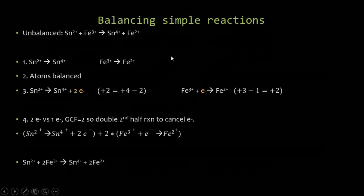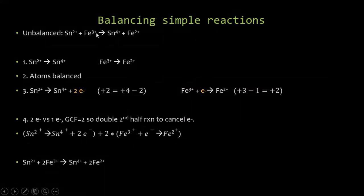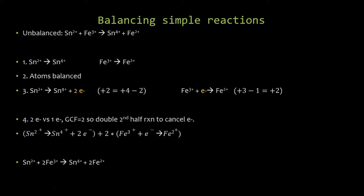The harder ones get trickier. Consider: Sn²⁺ plus Fe³⁺ goes to Sn⁴⁺ plus Fe²⁺. This looks balanced by element count — one tin on each side, one iron on each side. But looking at the charges: two plus three is five on the left, four plus two is six on the right — an electron is lost somewhere. So we need to balance this properly.